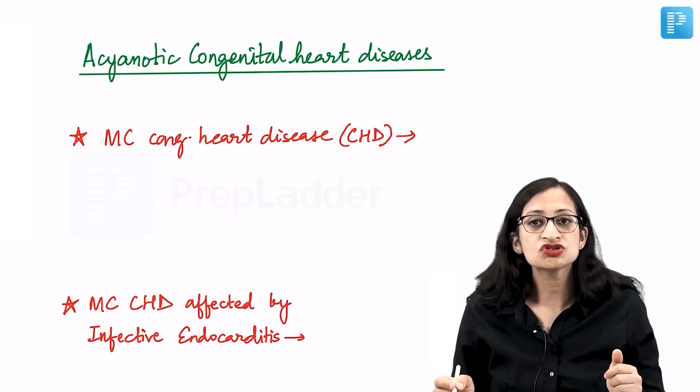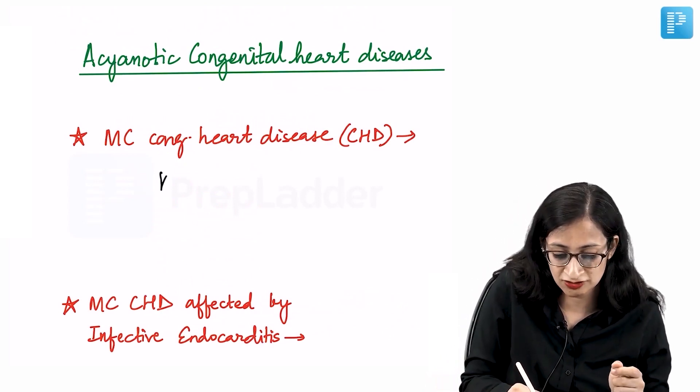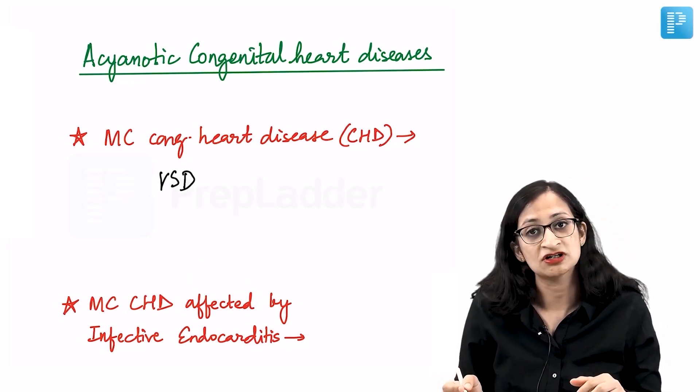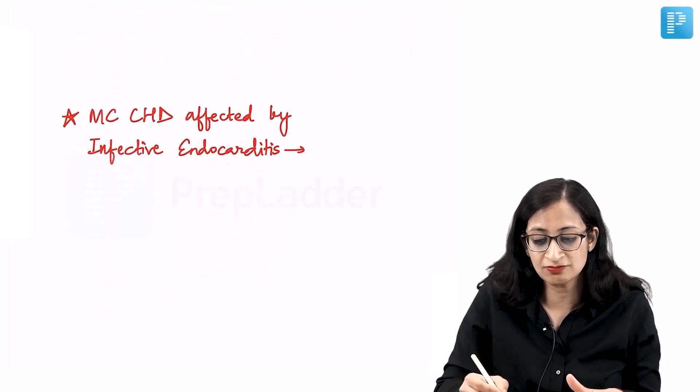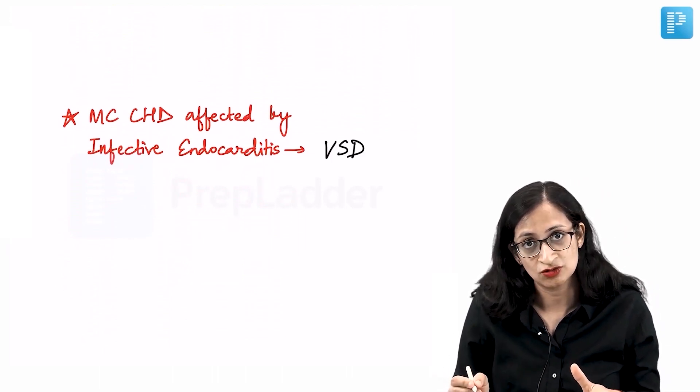Moving ahead, the most common congenital heart disease in children is ventricular septal defect or VSD. The most common congenital heart disease affected by infective endocarditis is also VSD, ventricular septal defect.